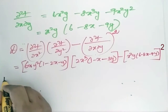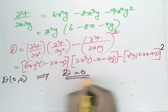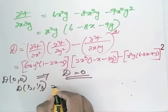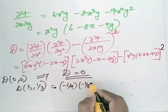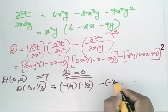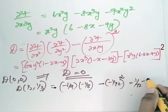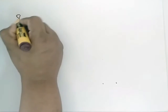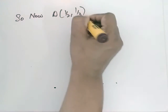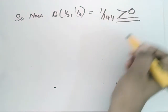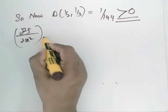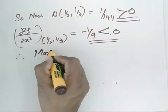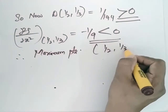D at (0, 0) implies D = 0. D at (1/2, 1/3): this equals (-1/9)(-1/8) - (-1/12)² = 1/72 - 1/144 = 1/144, which is greater than 0. Since ∂²f/∂x² at (1/2, 1/3) = -1/9 < 0, we conclude (1/2, 1/3) is a maximum point.